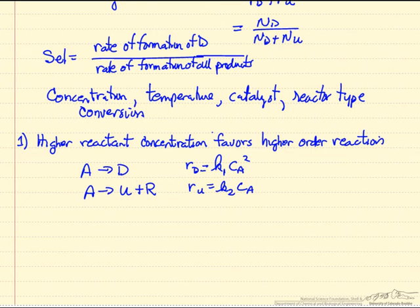Let's look at the effect of some of these variables on selectivity. A higher reactant concentration favors the higher order reaction. What this means is if I have two parallel reactions, I desire to make the product D. Let's say the rate of formation D is second order in our reactant concentration, but it's first order for the undesired reaction, first order in the concentration of A. Then if I have a higher concentration of A in my reactor, I'm going to favor this reaction. I'm going to have a higher selectivity by picking conditions that favor higher reactant concentration.